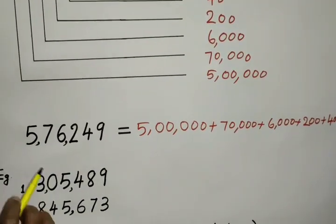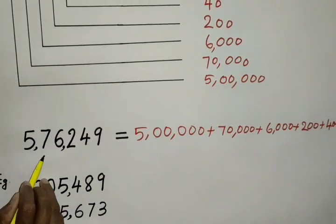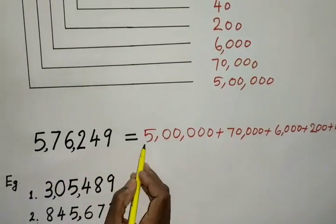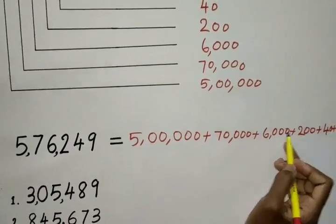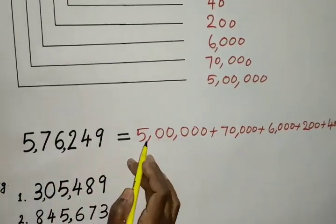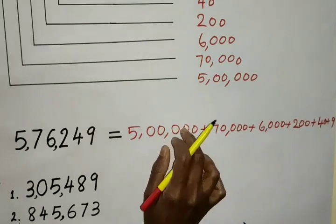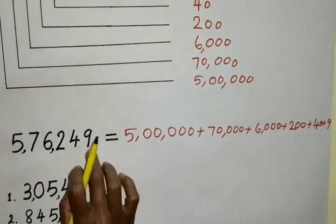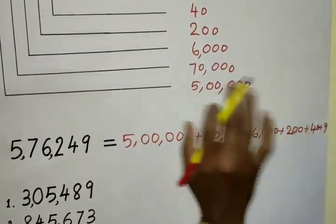Expanded form means the sum of place values of its digits.